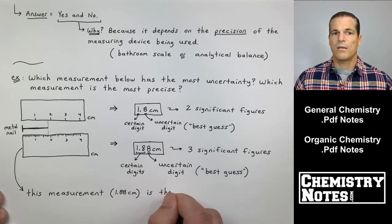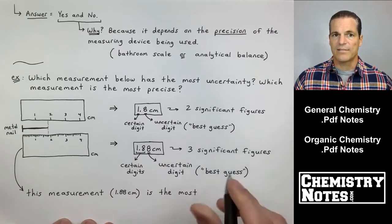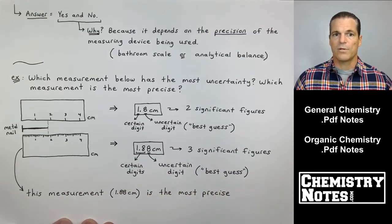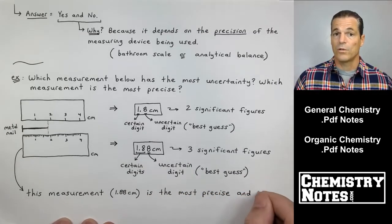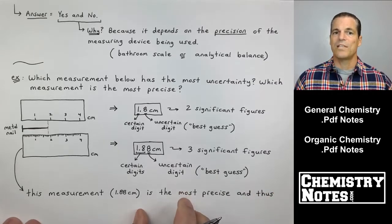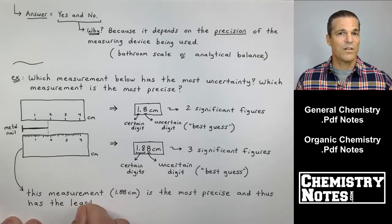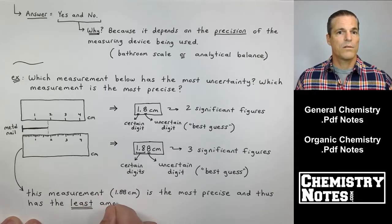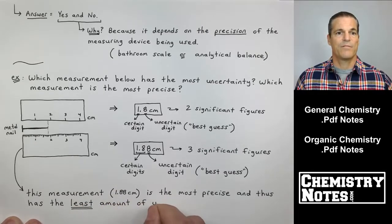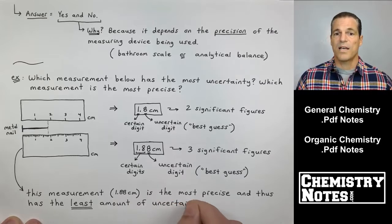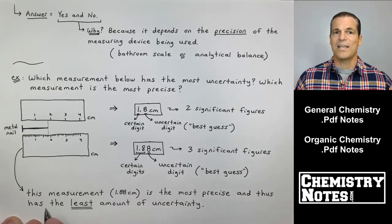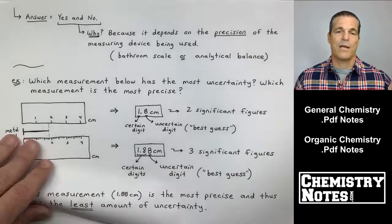You probably would have been able to guess that the second ruler, the bottom ruler, is the more precise ruler. But this is why. It produces a measurement, 1.88 centimeters, with three significant figures, which is more than the 1.8 centimeters above. So, the measurement is the most precise. And if it's the most precise, it has the least amount of uncertainty.